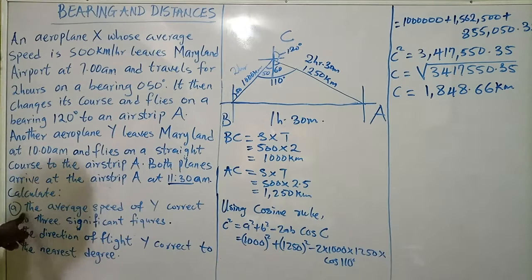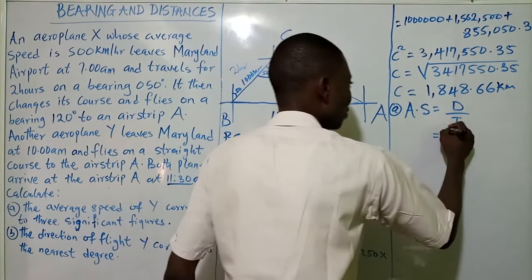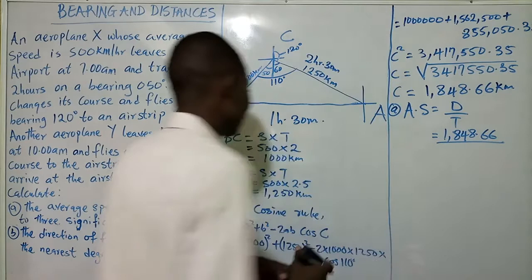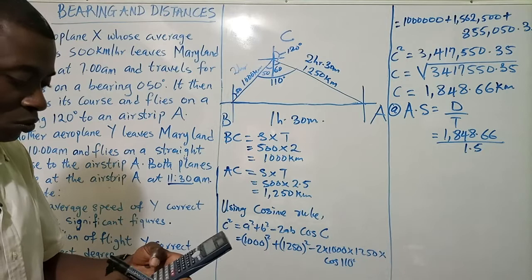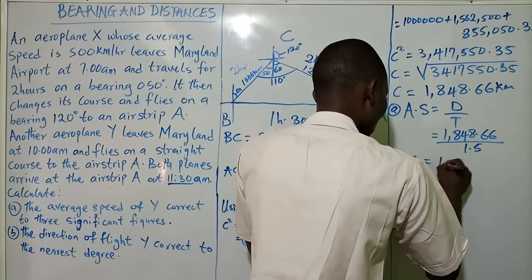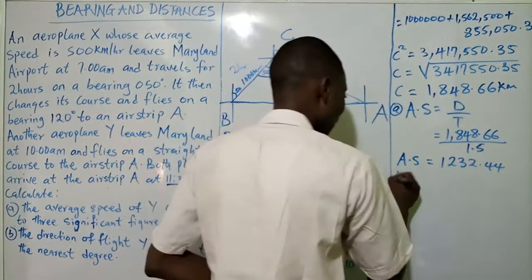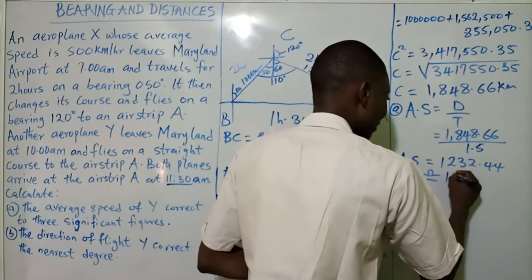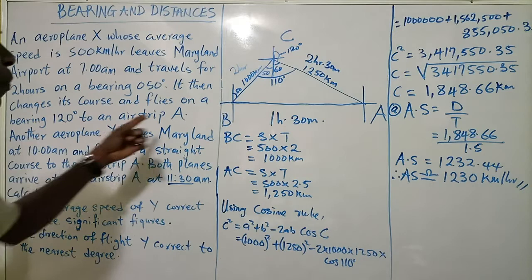Now we can calculate the average speed of Y. Average speed equals distance over time: 1848.66 divided by 1.5 hours, giving approximately 1232.44 km/h. Rounding to three significant figures, the average speed of Y is approximately 1230 kilometres per hour. That is the average speed of Y from Maryland airport to airstrip A.